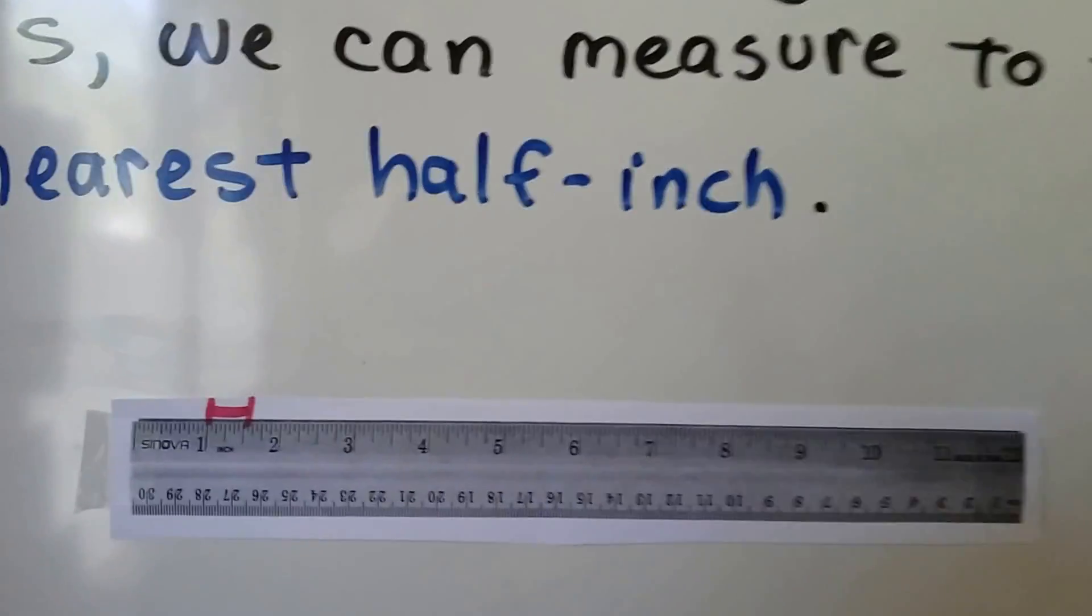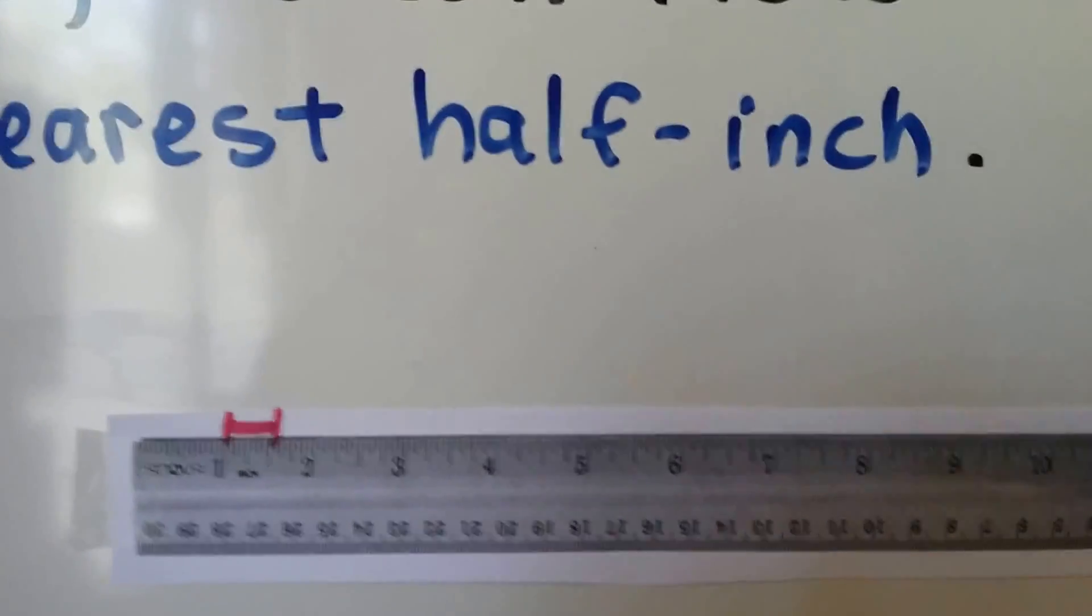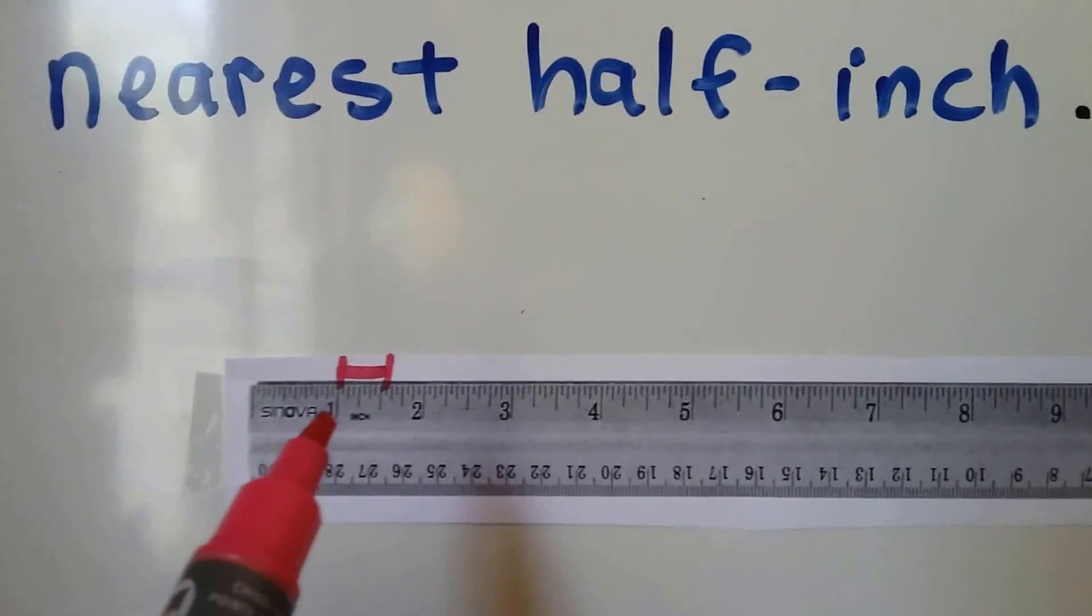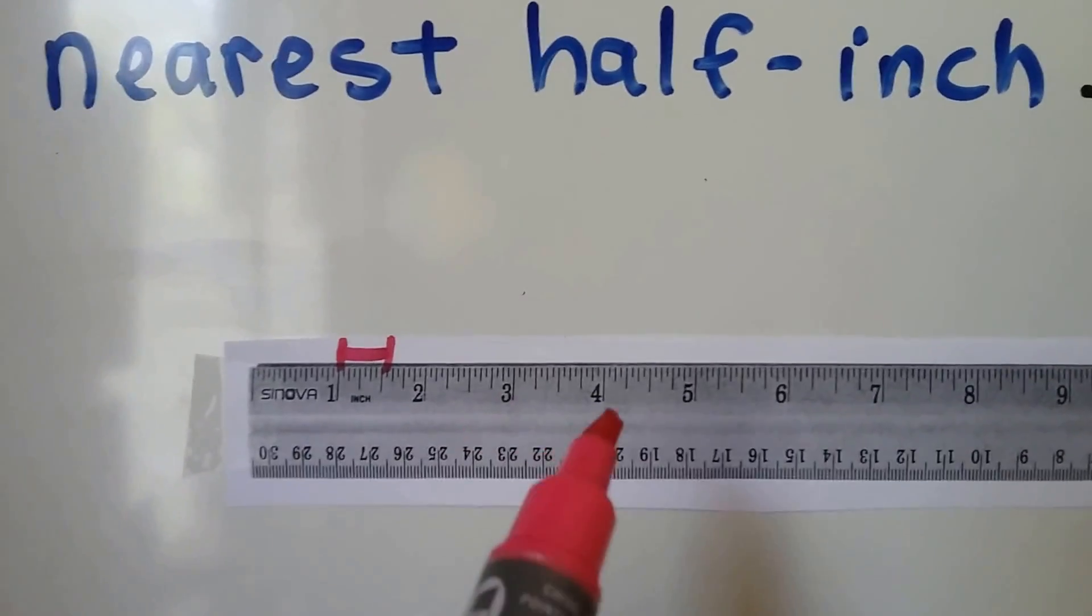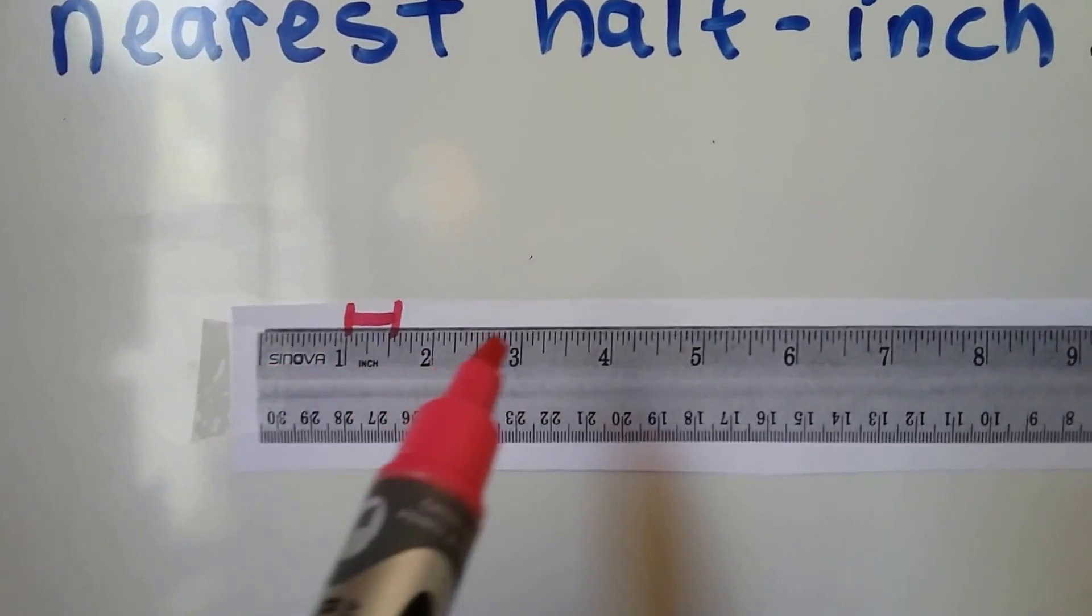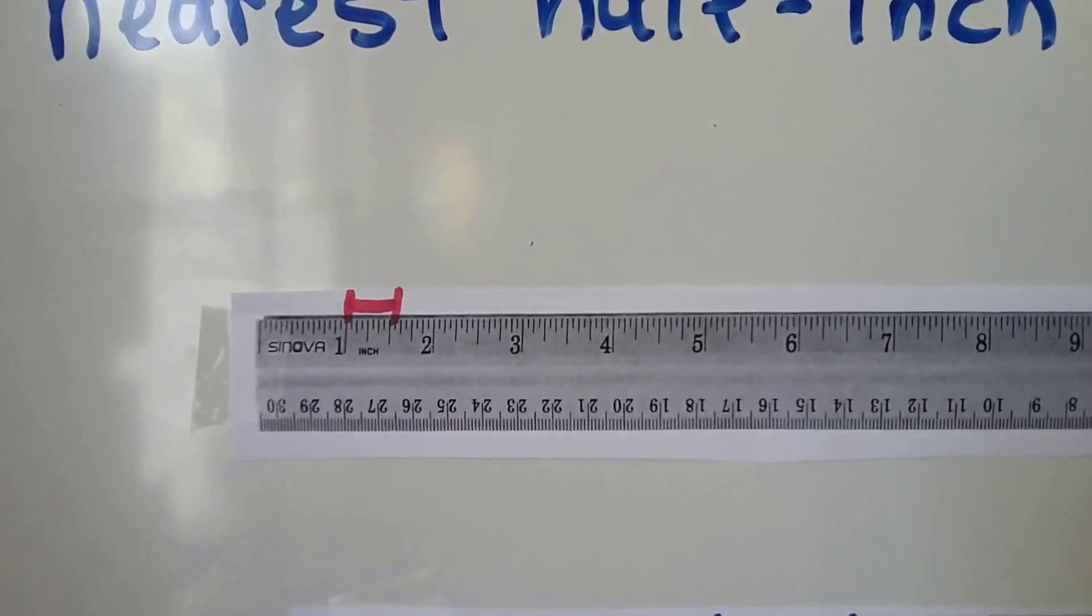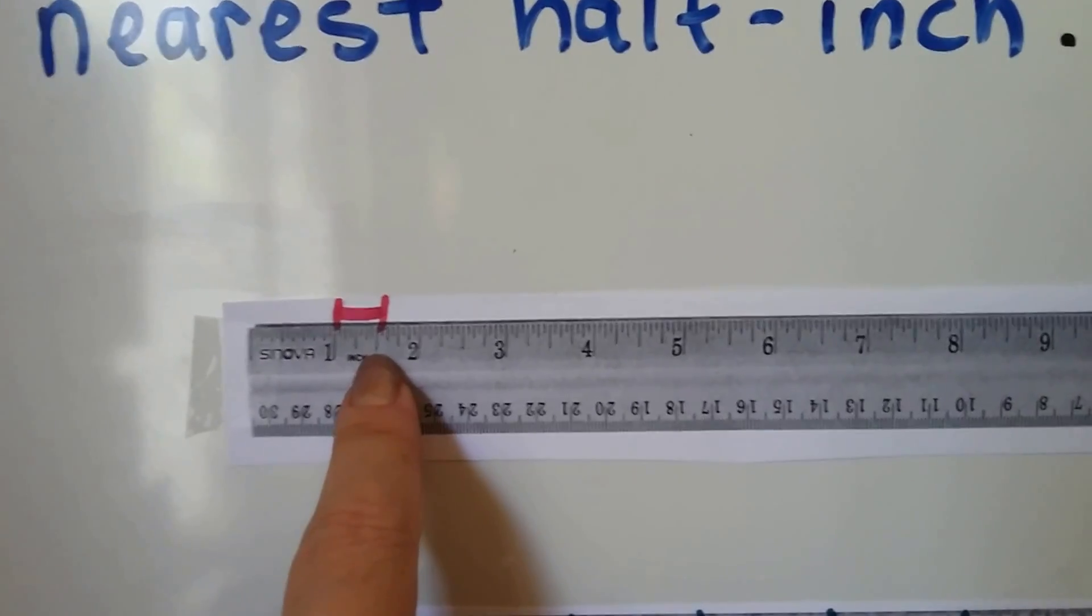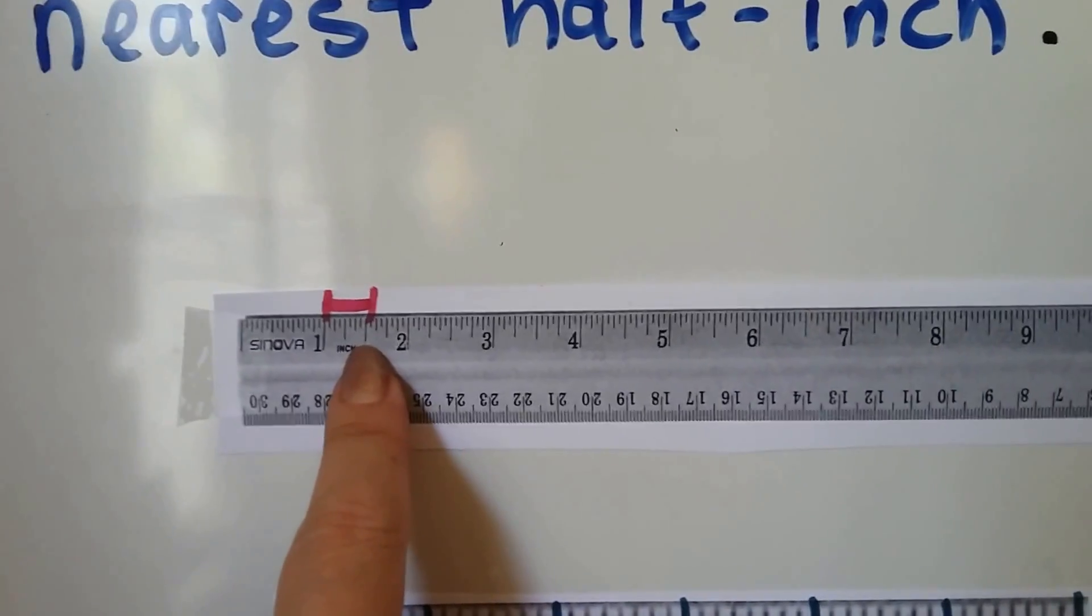Here's a ruler and I've got the inch side up. You can see the centimeters are down here. And in between the one, the two, the three, the four, you can see that there's all these other little lines. Well, right in the center between each number is a bigger line. That's the half inch mark.